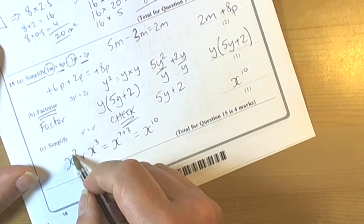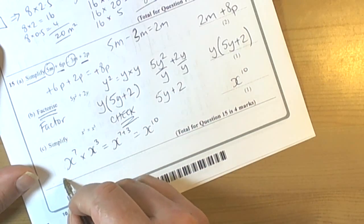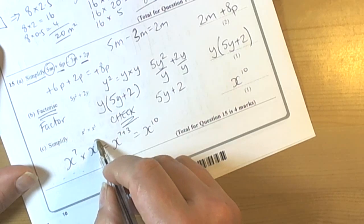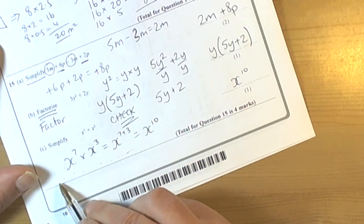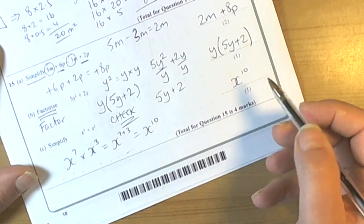If we wanted to check, X to the power of 7 means we're writing down 7 Xs multiplied. X to the power of 3 means we're adding another 3 Xs being multiplied. So altogether we'd have written down 10 Xs being multiplied, which means X to the power of 10.